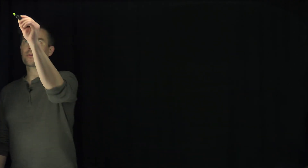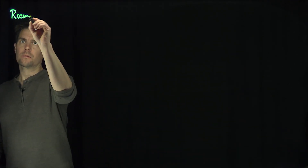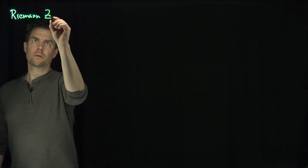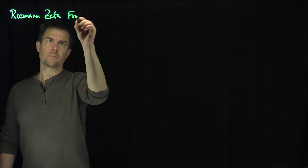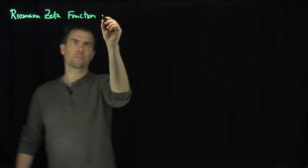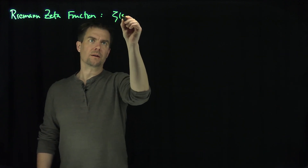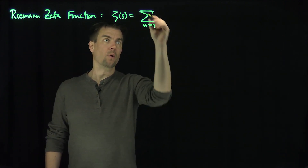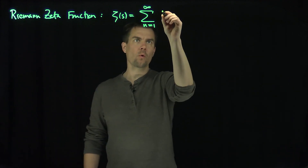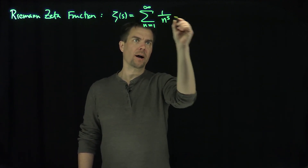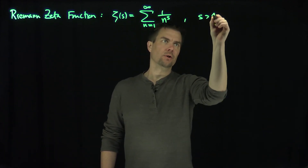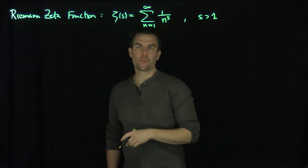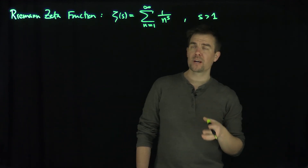Hello students. In this video we'll derive an integral representation for the Riemann zeta function. The Riemann zeta function is zeta of s, and it's the sum from n equals 1 to infinity of 1 over n to the power s, and this is defined for s strictly larger than 1. We're eventually going to extend this function to the complex plane.